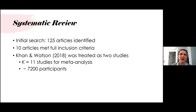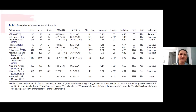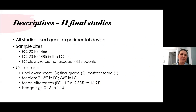This table describes each of the studies. To summarize, all the studies used a quasi-experimental design where students ultimately chose between the flipped and lecture sections. The total sample sizes in the flipped class as well as the lecture class ranged between about 20 and 1,500.